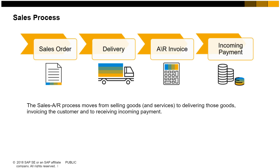The sales AR process moves from selling the goods and services, to delivering those goods, to invoicing the customer for their purchases, to the last step in accounting of receiving the incoming payment. Each step in the sales process involves a document such as a sales order, delivery, or AR invoice.